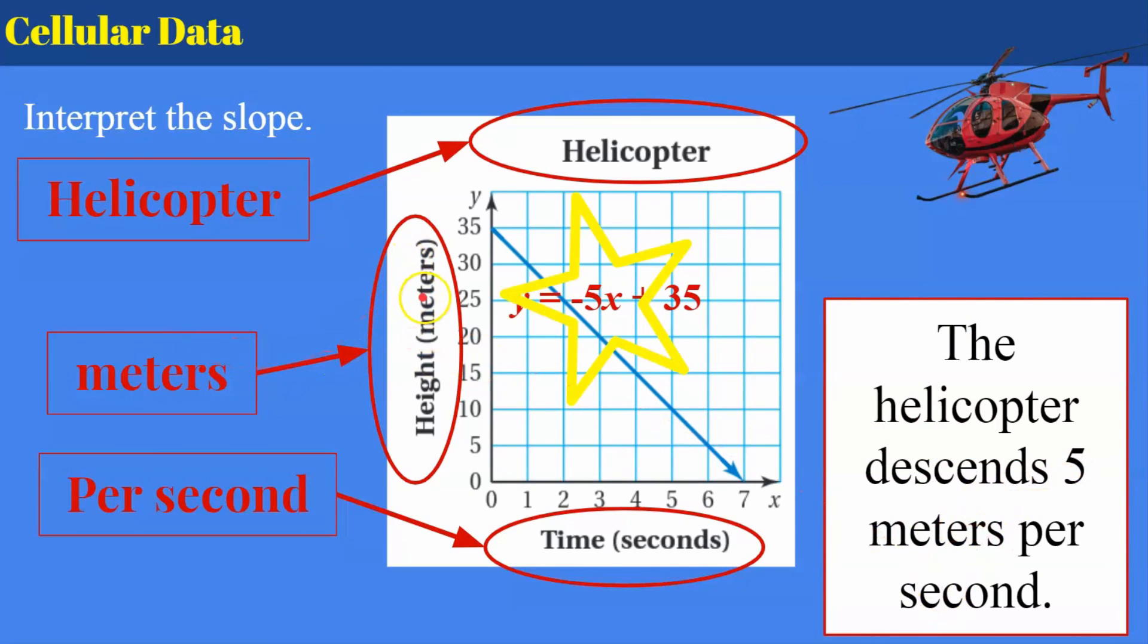So we're going down 5 meters per second. I would also accept that a helicopter is going down 5 meters per second. Or the helicopter is landing at a rate of 5 meters per second. So as long as you have the words helicopter, meter, and seconds, you're good. With your slope, of course.